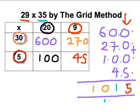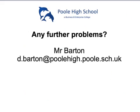So my final answer to 29 times 35 is 1015, which we can be reassured is the same as the answer that we got for the other method, which is really good.